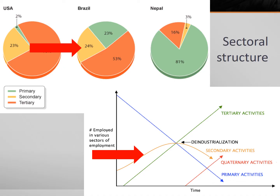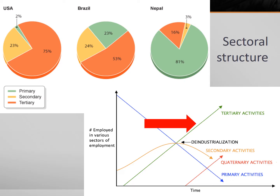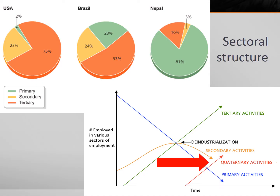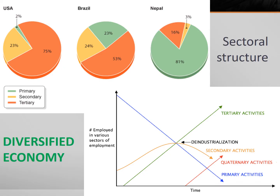Brazil has a much higher secondary sector employment rate than Nepal. Core countries are dominated by the tertiary sector — in part because secondary sector employment has declined due to automation. Countries like the United States, Japan, Australia, and Singapore have very low primary sector employment and relatively low secondary sector employment as the share of service sector jobs, especially quaternary and quinary jobs, increases. A diversified economy means a country has a balance between all three sectors, which can contribute to improving levels of development.